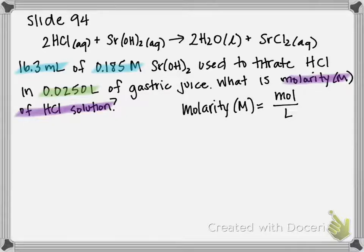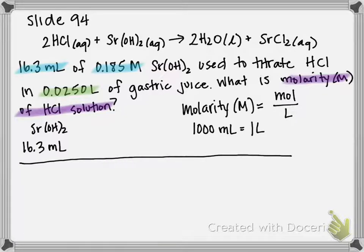In order to cancel out our bottom unit on molarity of liters, we're going to need to convert this from milliliters to liters. So remember that 1,000 milliliters equal 1 liter. So we're starting off with 16.3 milliliters of strontium hydroxide. First thing I'm going to do is get from milliliters to liters using my ratio that I just wrote. So unit you want to cancel goes on the bottom, 1,000 milliliters in 1 liter. So milliliters are canceled out. We're now in units of liters.